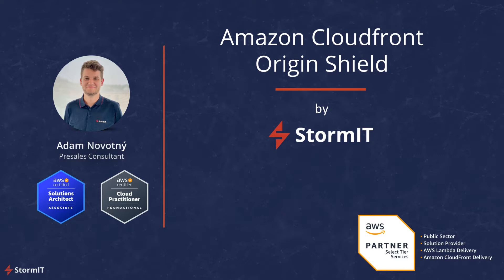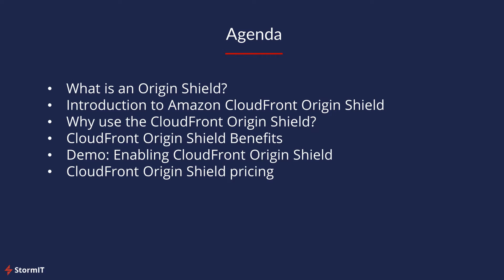Content delivery networks such as CloudFront can cache your content on hundreds of points of presence closer to your users. Some CDNs have their own features that can dramatically improve your cache ratios and protect your origin server. One of these features is called Origin Shield. We will look at what Origin Shield is, specifically Amazon CloudFront Origin Shield, its use cases, how to enable it in the AWS Management Console, and finally its pricing.